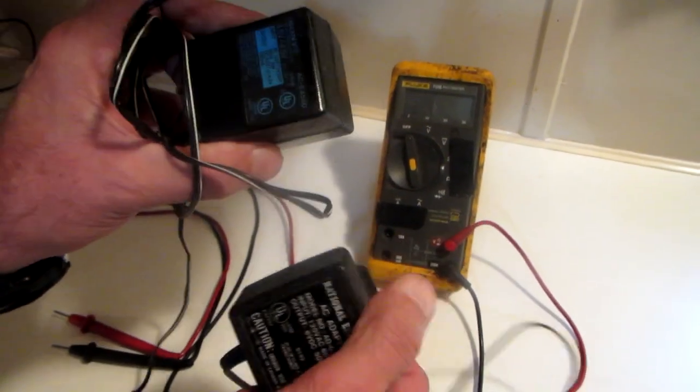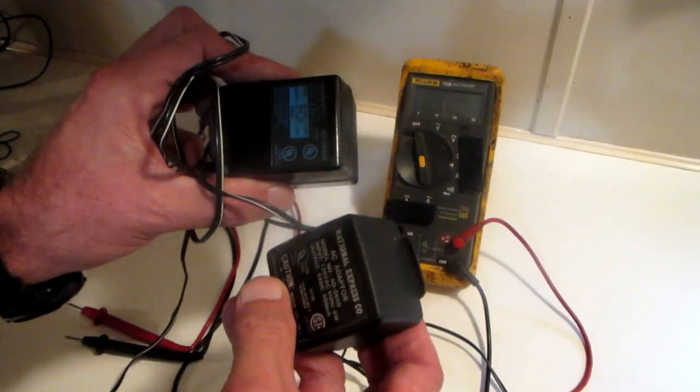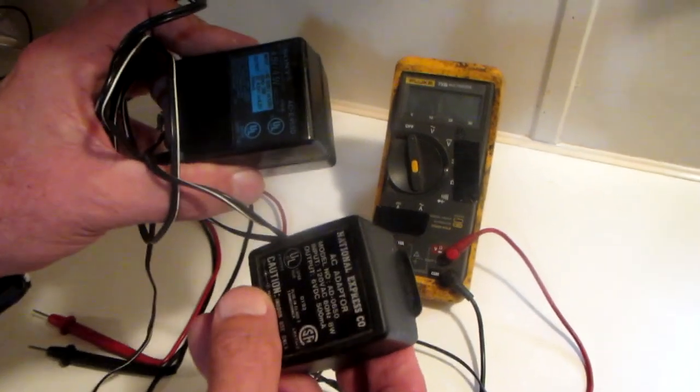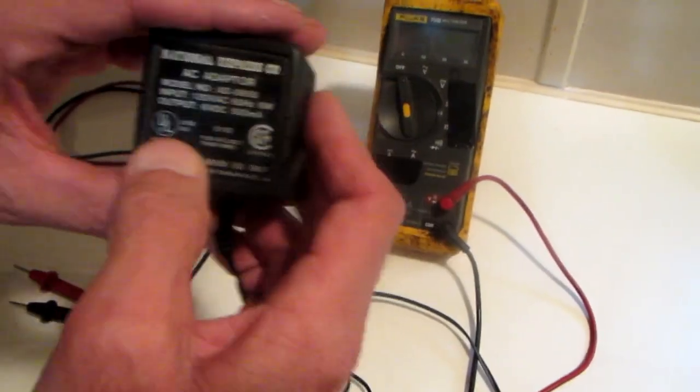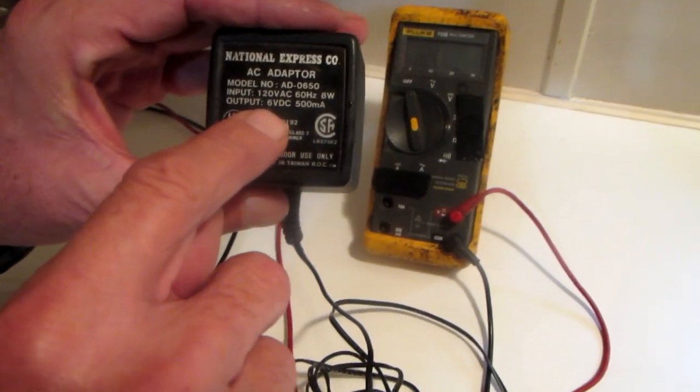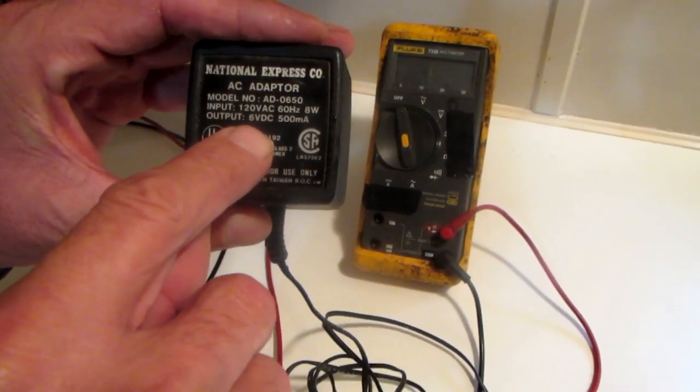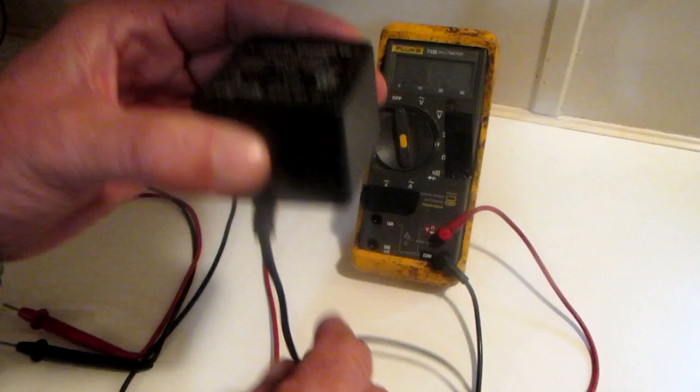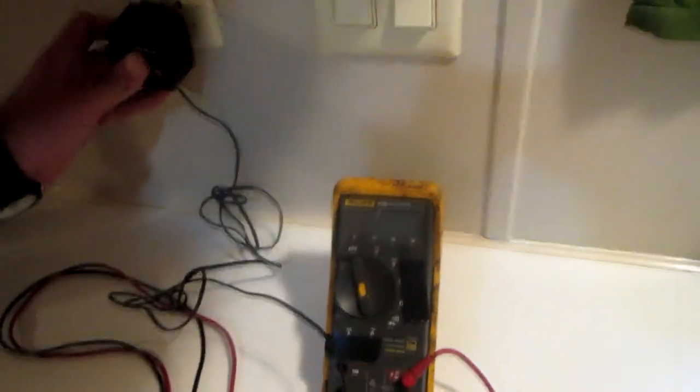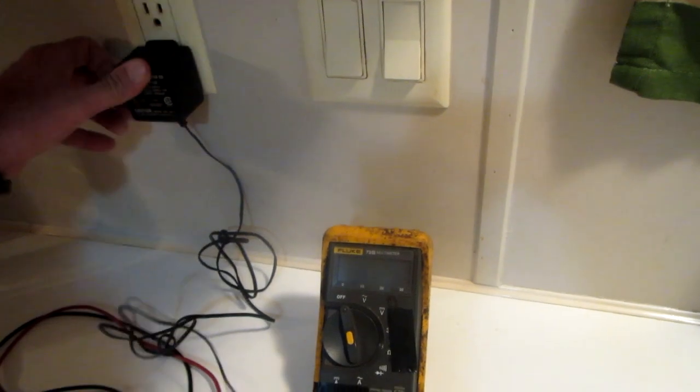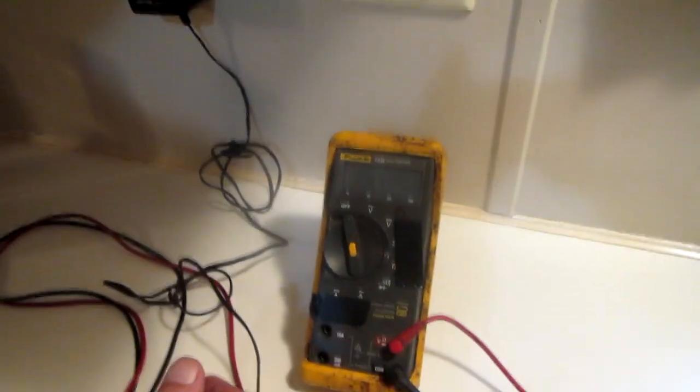We're going to use a multimeter to test some of these small accessory battery chargers. Take a look at your charger and read the back. It's going to give you what the DC output is to charge your batteries. Remember, that output is what it takes to charge your appliance battery.